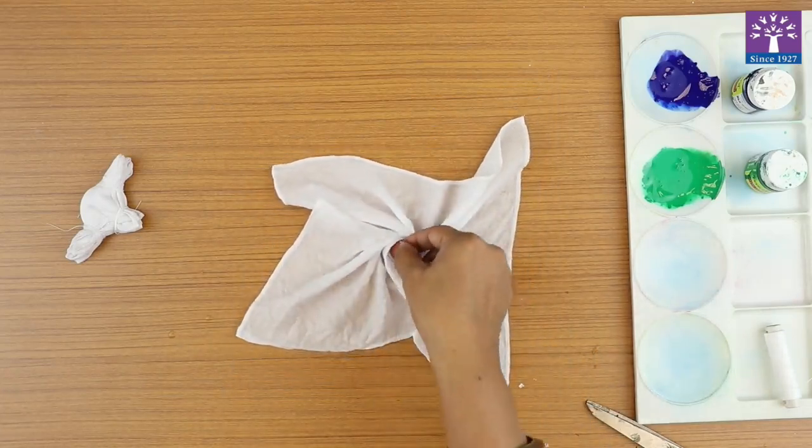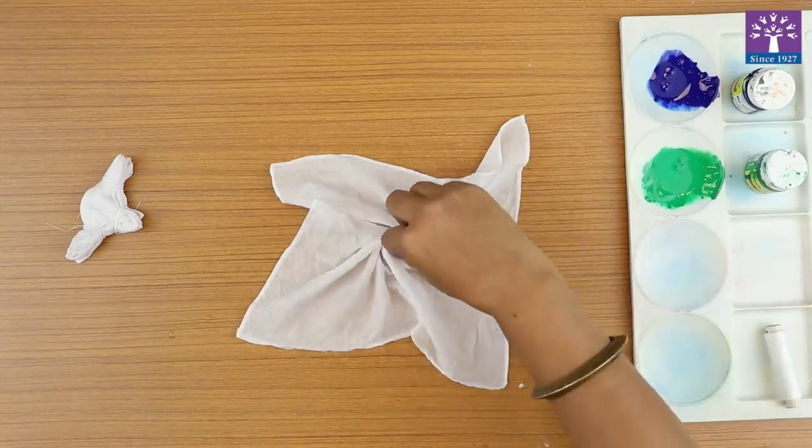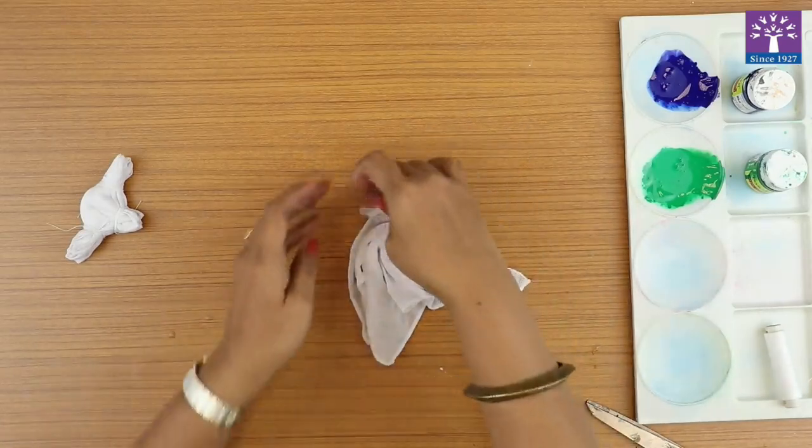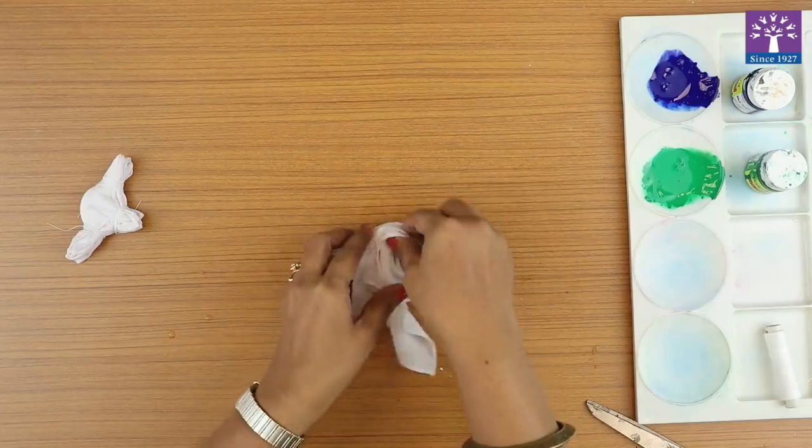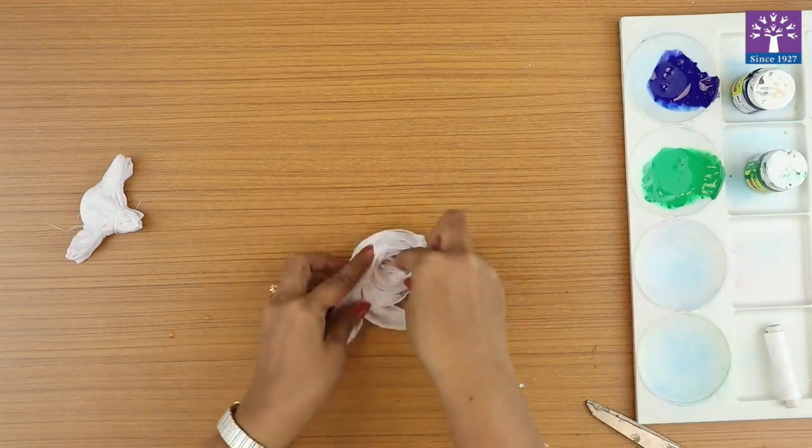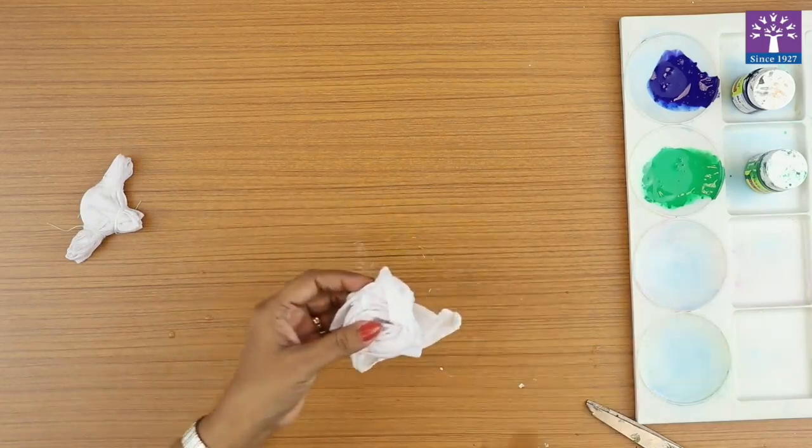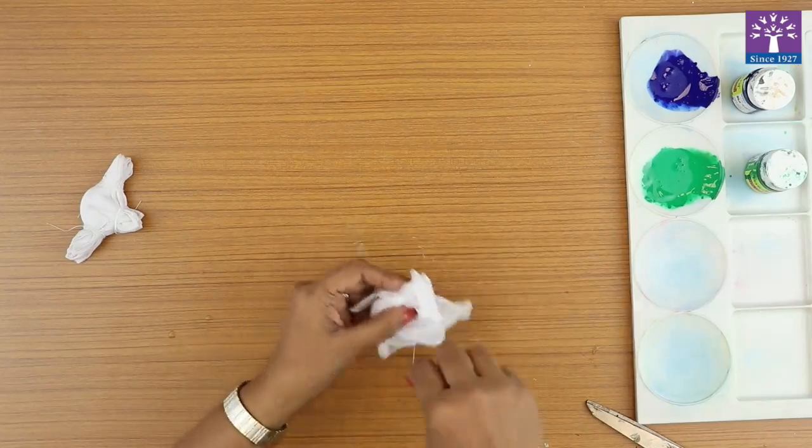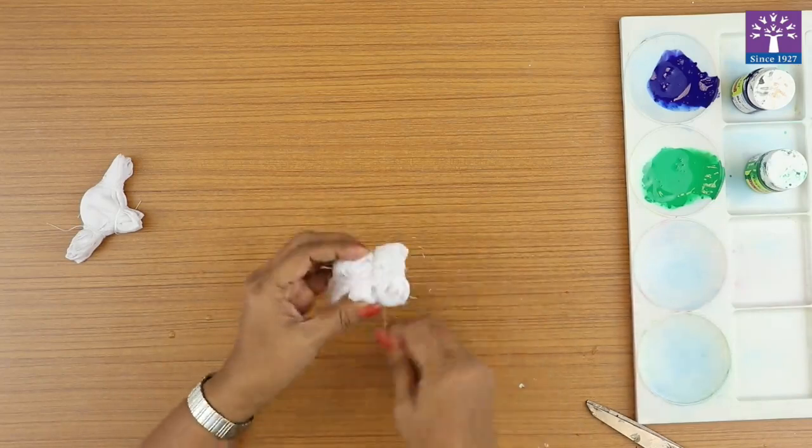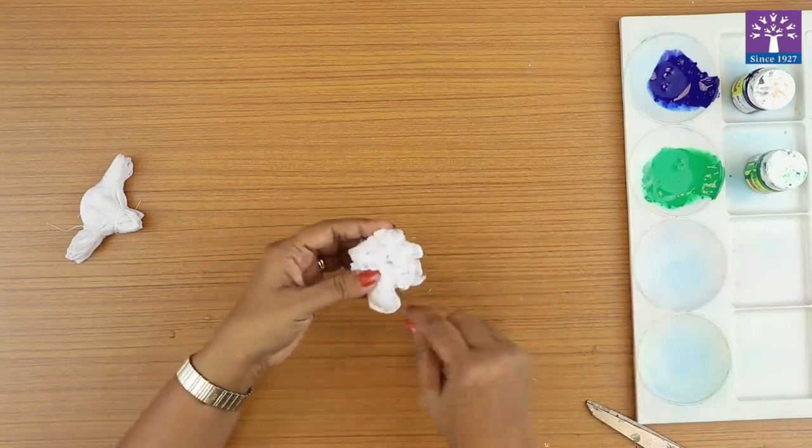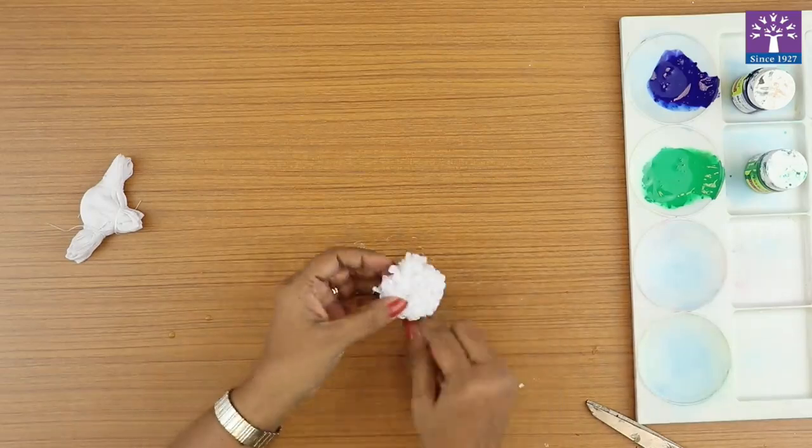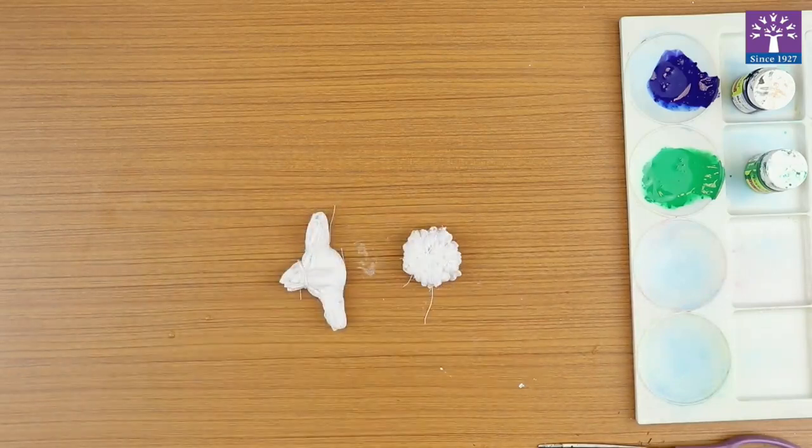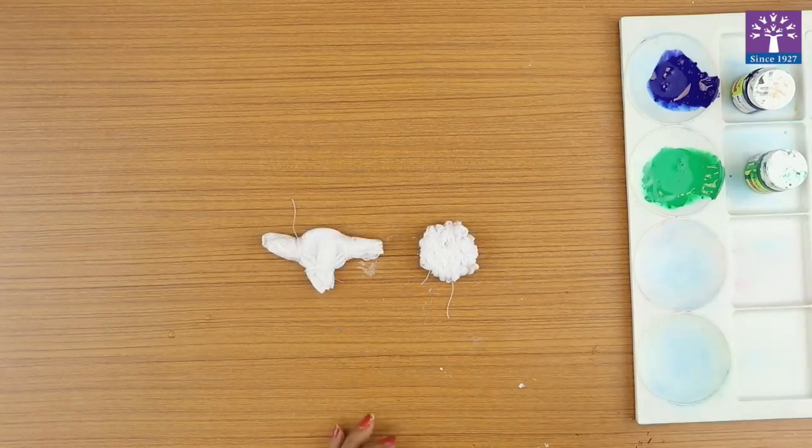Twist it around like this. Keep on twisting till you get a nice tight circle. Now tie the thread around randomly. Now you've got these two tie and dye techniques ready.